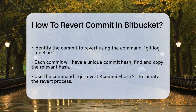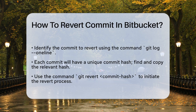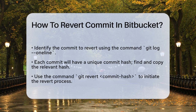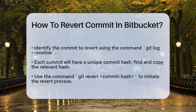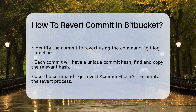First, you need to identify the commit you want to revert. To do this, use the git log --oneline command in your terminal. This will show you a list of your commits, each with a unique commit hash. Find the commit hash of the commit you want to revert and copy it.